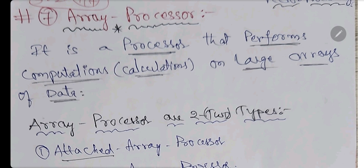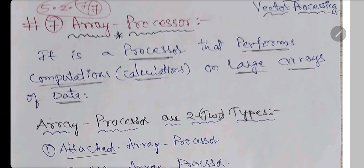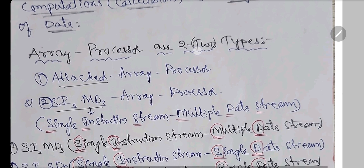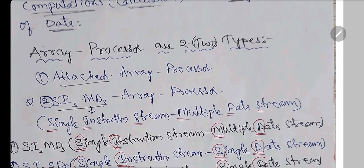An array processor is a processor that performs computational operations - including calculation, logic, and shift operations - on large arrays of data. Array processors are of two types: attached array processor and SIMD array processor. For a short answer question, write the definition and these two types.